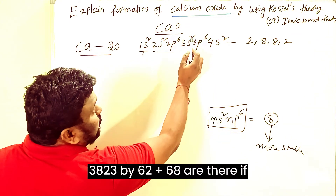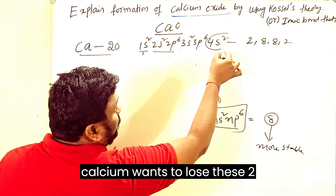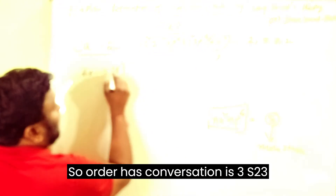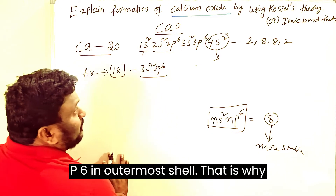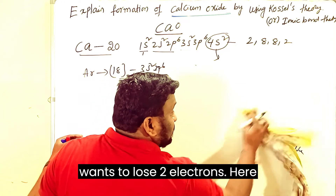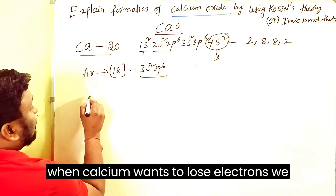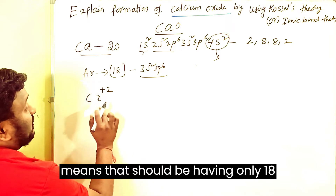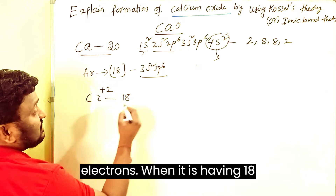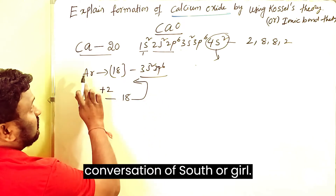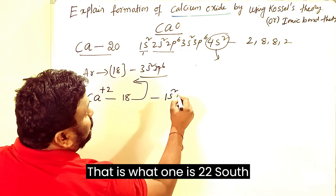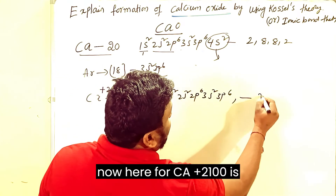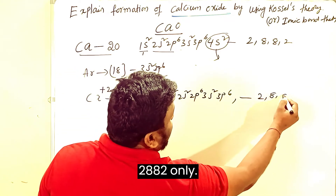In the third shell, 3s² 3p⁶ gives 2+6=8 electrons. If calcium loses these 2 outer electrons, it gains the configuration of argon. Argon's outermost configuration is 3s² 3p⁶. So calcium wants to lose 2 electrons, becoming Ca²⁺. Ca²⁺ has only 18 electrons with configuration 1s² 2s² 2p⁶ 3s² 3p⁶ — the same as argon — shown as 2, 8, 8.